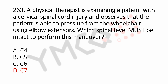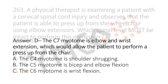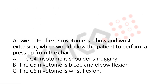The C7 myotome is elbow and wrist extension, which would allow the patient to perform a press up from the chair. The C4 myotome is shoulder shrugging. The C5 myotome is bicep and elbow flexion.